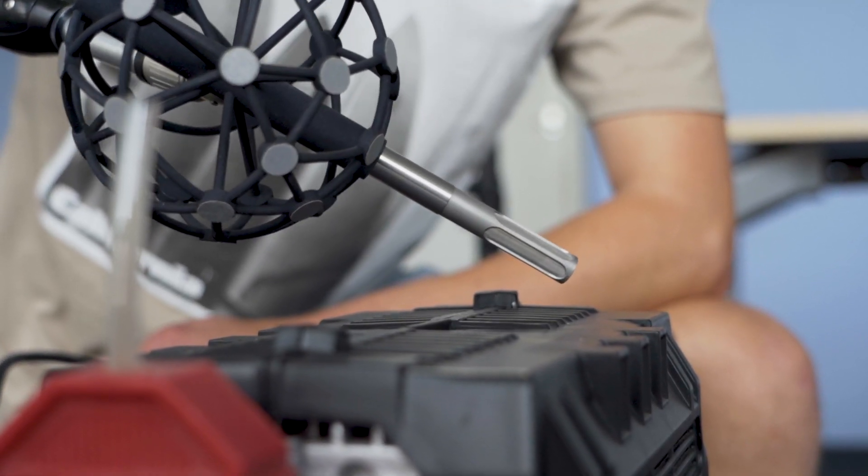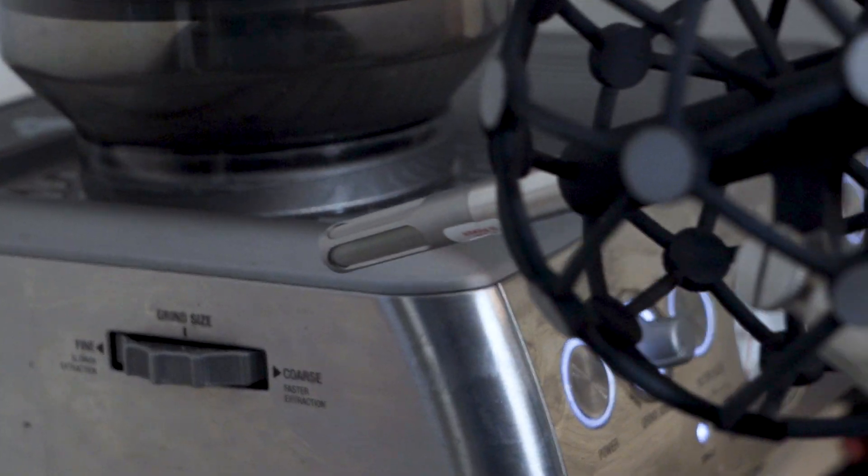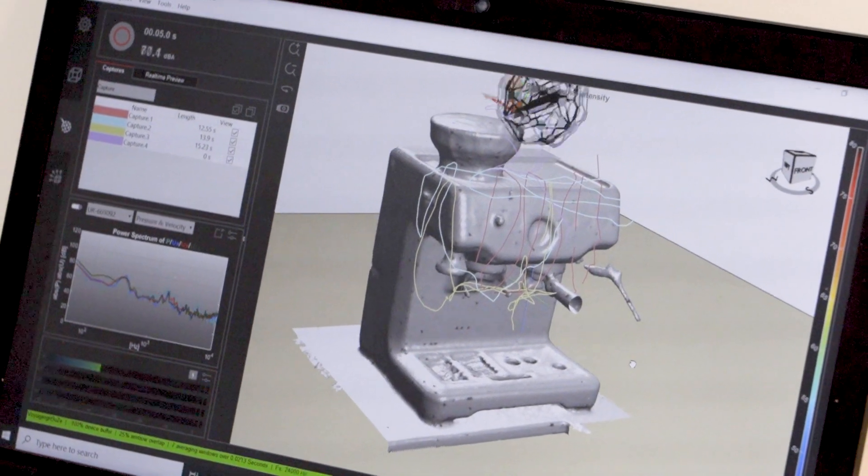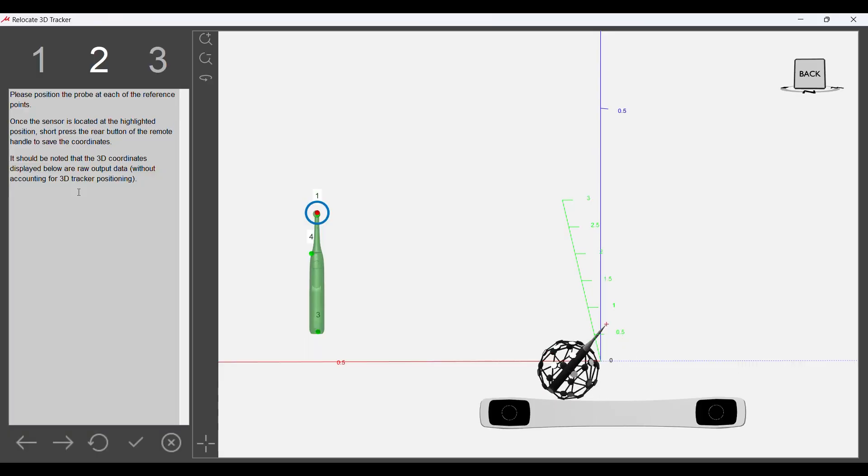Measurements are carried out by manually scanning the volume surrounding your test object. An infrared optical tracking system captures the real-time position and orientation of the moving probe.